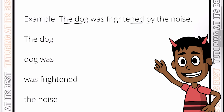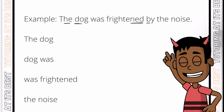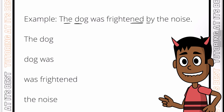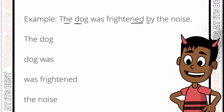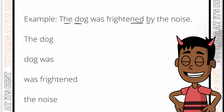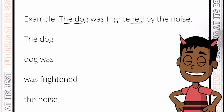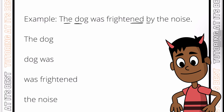Some students find it easier to position their thumbs or fingers over the words so that they can only see four letters at a time. With that being said, let's dive into this example: 'The dog was frightened by the noise.' They've given us four options here.